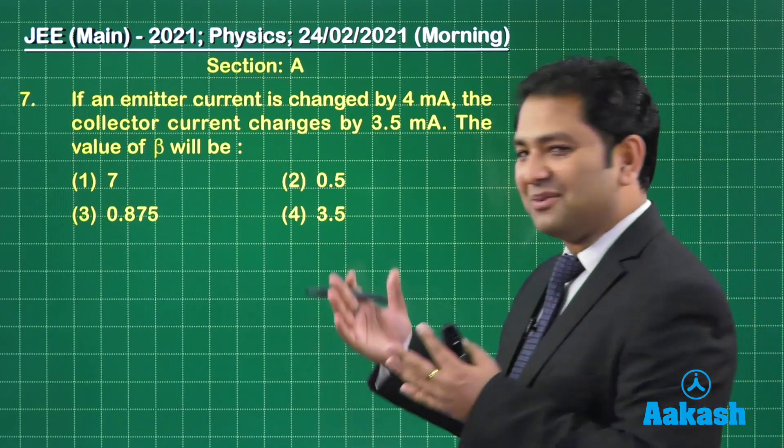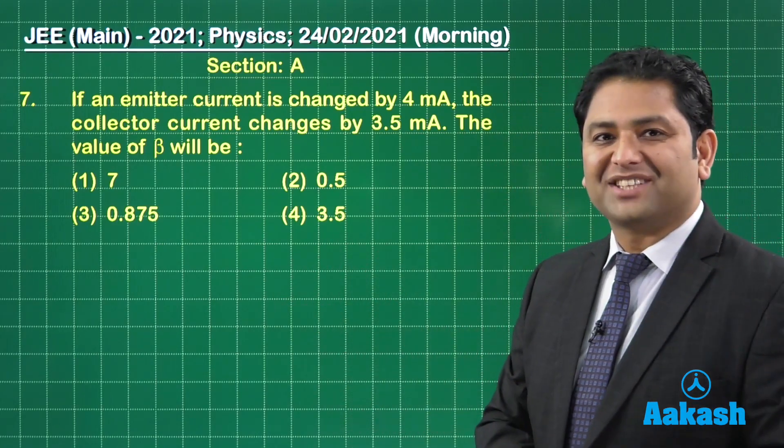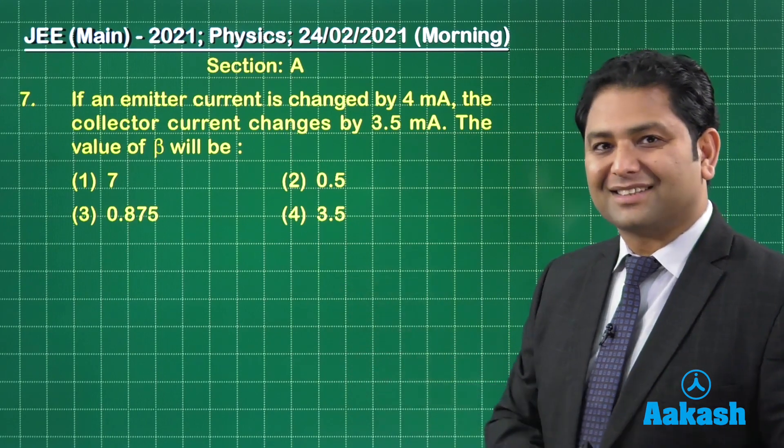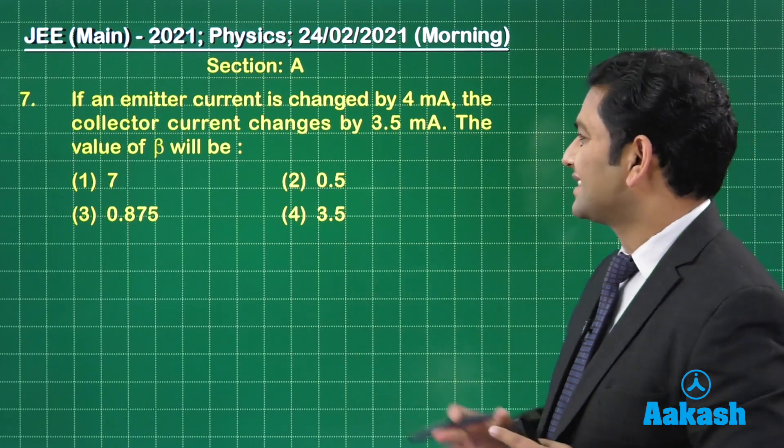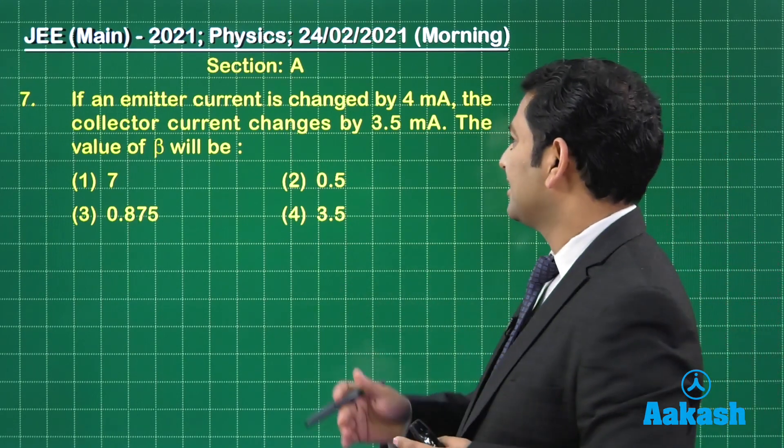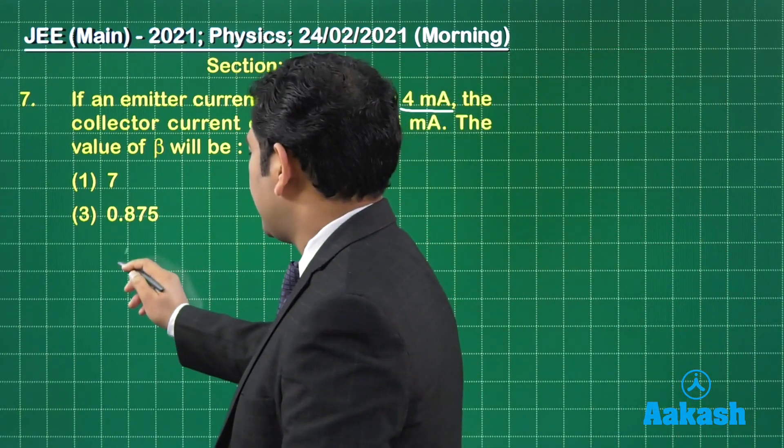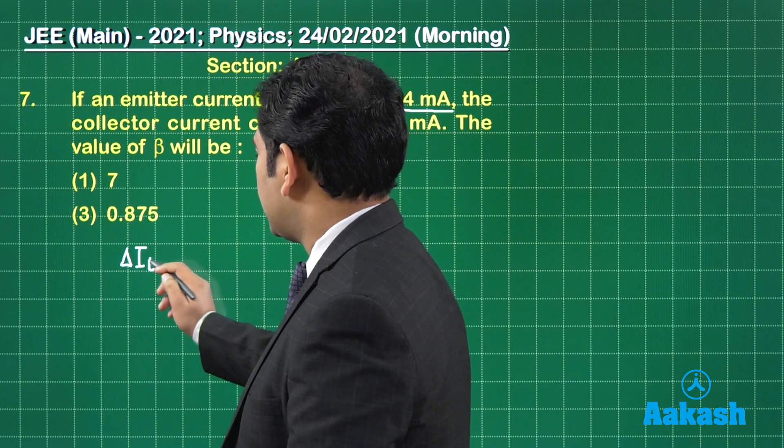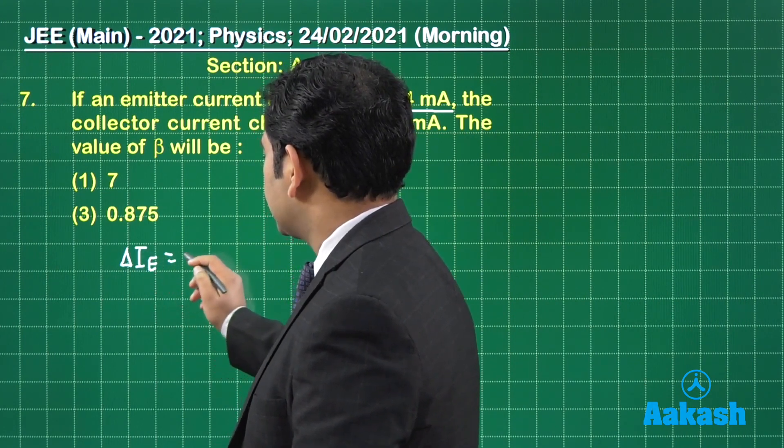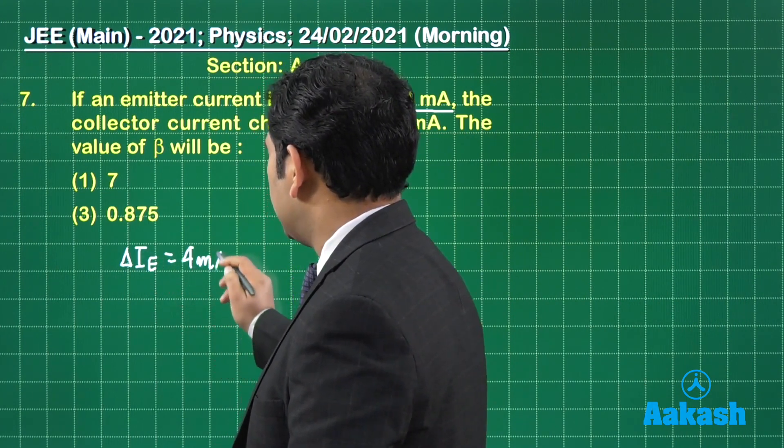The seventh question, the ever-favorite of JEE Main, the semiconductor. What does it say? If an emitter current changes by 4 milliampere, that means the value of delta IE equals 4 milliampere.